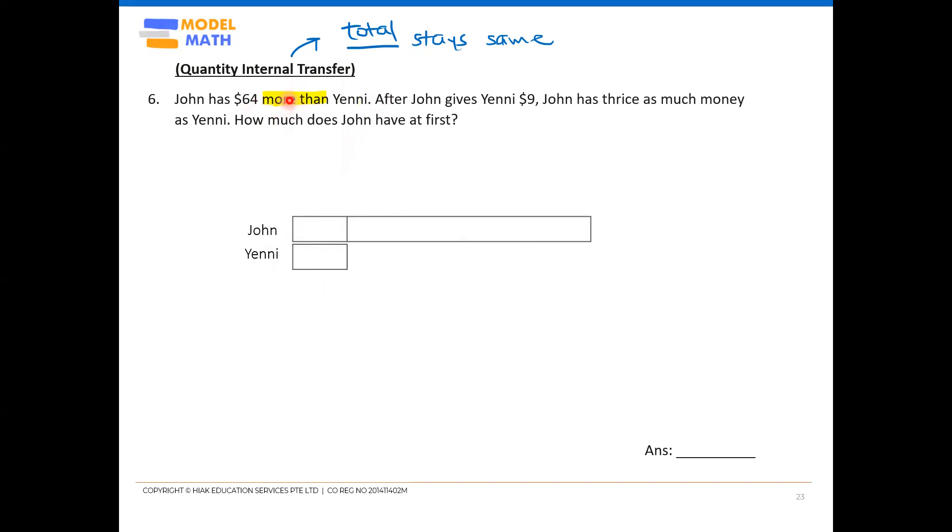That is because if you notice, John is the one who has much more money at first. And even though later John gives money to Yenny, later John still has twice as much as her. You see, the situation is like that. He is so rich at first, and he actually gives money to Yenny, but in the end, he is still much more richer than Yenny. That must give us a clue that John initially must be really so much richer than Yenny. That is why I show a really huge difference of $64.